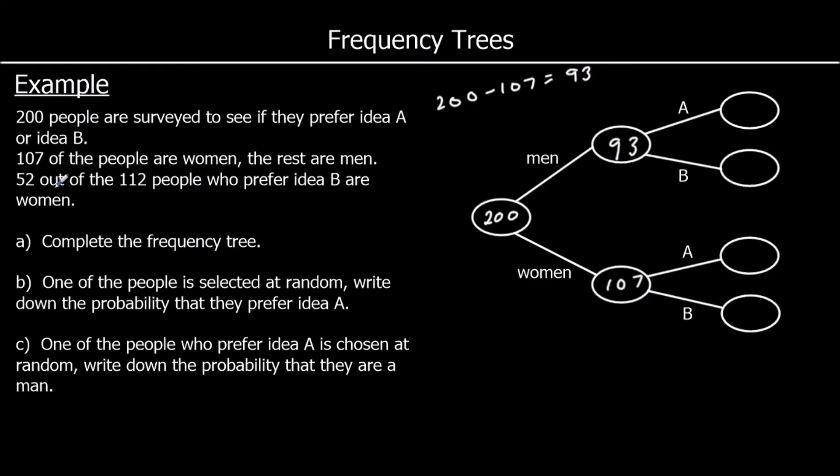52 out of that 112 people that prefer idea B are women. So 52 women prefer idea B. And we were told 112 people prefer idea B. So how many men? 112 take away 52, and that is 60. So 60 men prefer idea B.